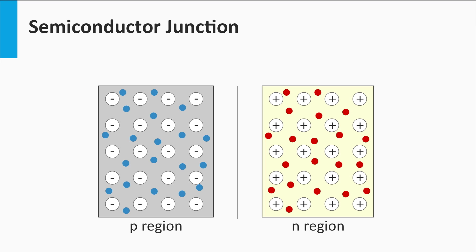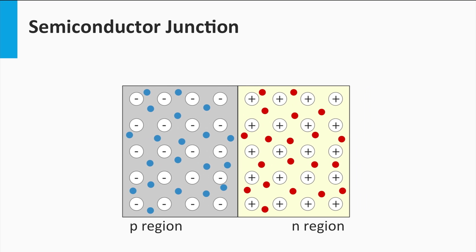Now we glue the n-type and p-type semiconductor materials together, and this is what we call a p-n junction. In reality we take one piece of silicon material in which we intentionally dope one part p-type and the other part n-type.